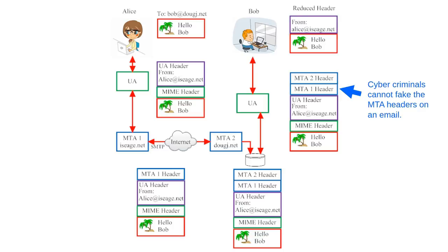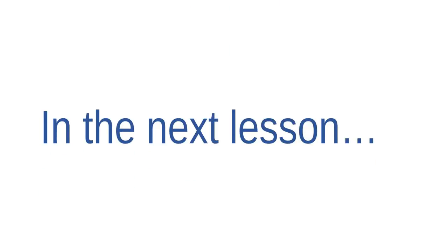Cybercriminals can fake the return address on an email, but they cannot fake the message transfer agent headers. If you receive a suspicious email claiming to be from your grandma, you can check the detailed header to determine whether it really came from the same message transfer agent as her other emails. That's all for now about email systems. In the next video, we'll talk about security threats that come through email and identify some ways to avoid or minimize these threats.